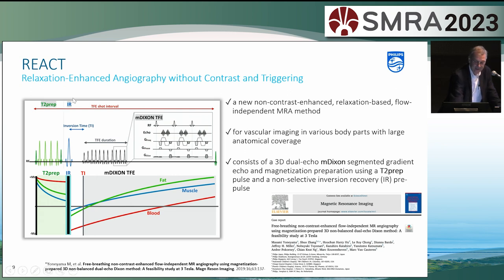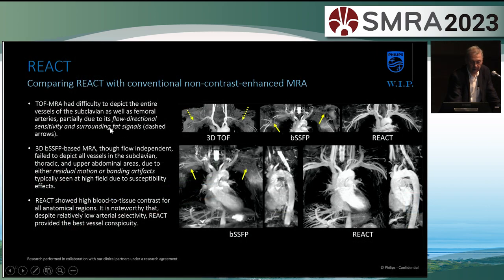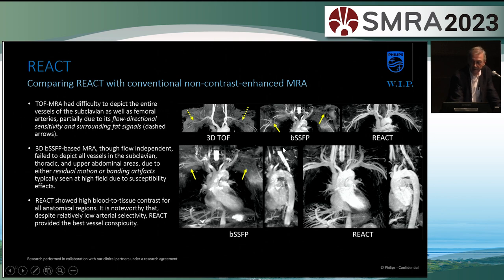REACT stands for Relaxation Enhanced Angiography without Contrast and Triggering. So it's not only without contrast, it's also without triggering — you don't need physiological synchronization, neither cardiac nor respiratory. It can be used for vascular imaging in various body parts. It consists of magnetization preparation using T2 prep and a non-selective IR pulse, and is also acquired with M-Dixon. If you look at a comparison of TOF, balanced steady-state free precession, and REACT: in TOF, reverse flow is not visualized well; with balanced sequences, especially at a larger field of view, you get banding artifacts. In REACT, it's pretty free of all these artifacts.